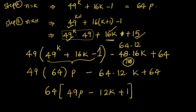What we have done is: we took the n equal to k assumption, then wrote out the n equal to k plus 1 expression. We multiplied the n equal to k expression by 49 and subtracted as needed to get n equal to k plus 1. The key idea is that n equal to k plus 1 is nothing but a multiple of the n equal to k expression minus some term — which is also a multiple of 64. So the final result is 64 into 49p minus 12k plus 1, which is a multiple of 64.